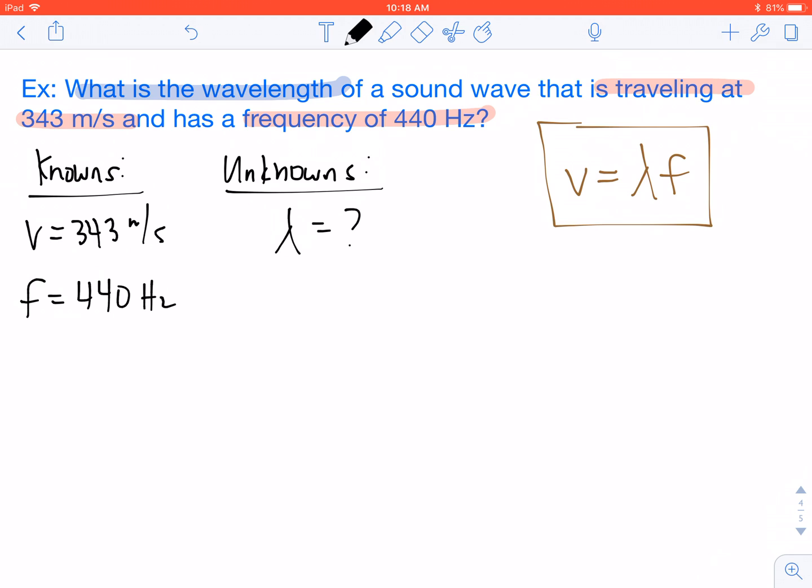So at this point, all we have to do is plug our numbers into the equation. We said that our velocity was 343 meters per second. That equals the wavelength times our frequency, which is 440 hertz.